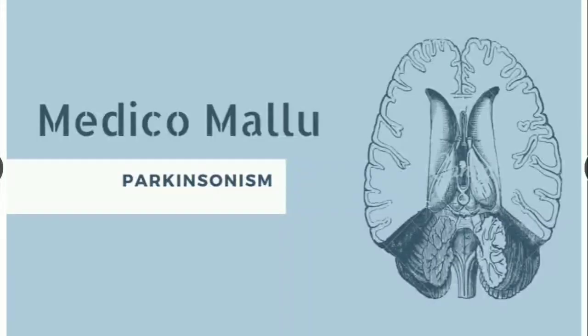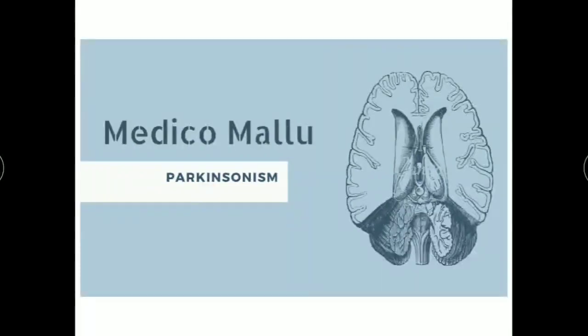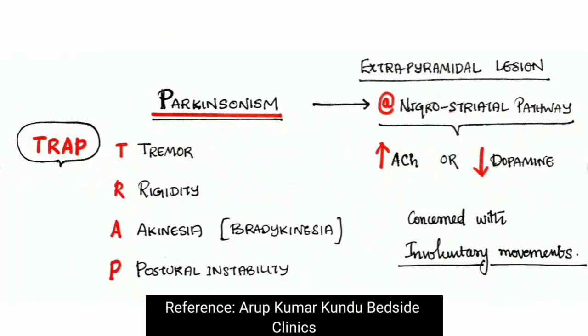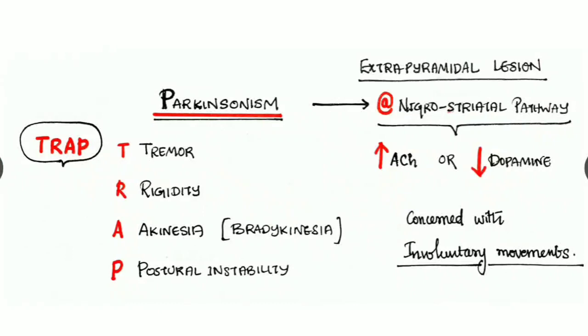Once again, welcome to Medico Mallu. This time we are going to discuss a small but very important topic: Parkinsonism. What is Parkinsonism? It is due to an extrapyramidal lesion, more specifically in the nigrostriatal pathway. It is due to either increase in the neurotransmitter acetylcholine or decrease in the neurotransmitter dopamine, and it is concerned with involuntary movements.